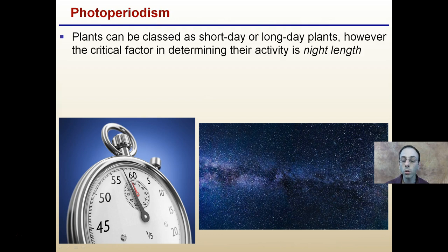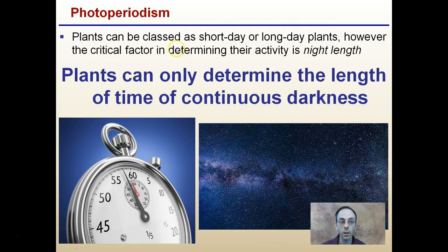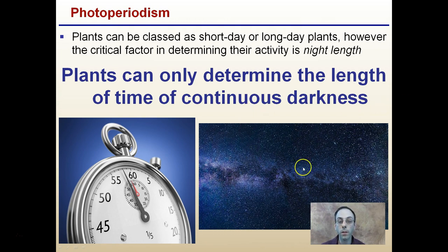One key factor is that while plants are classified as short-day or long-day plants, the critical factor determining their activity is actually night length. Plants can only determine the length of time of continuous darkness — that's how they tell time. As soon as the sun sets, plants start a stopwatch, and as soon as they see light again at sunrise, they stop that stopwatch and determine whether it was a short or long day based solely on the length of continuous darkness.